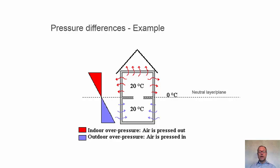And we'll have overpressure, positive pressure in the upper part of the building and in the lower part there will be under pressure. So the cold air will be pressed in by the difference in pressure inside and outside, and warm air will be pressed out in the upper side of the building.